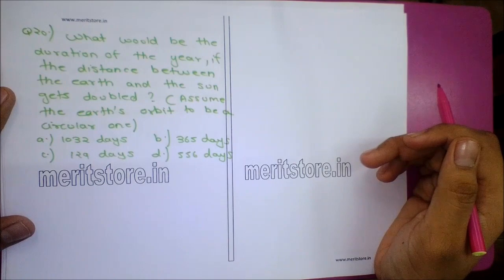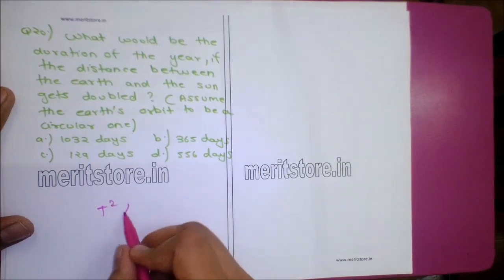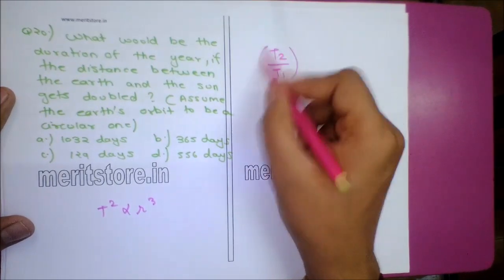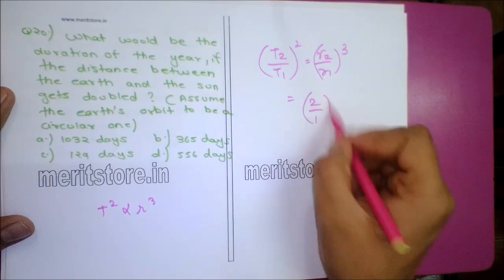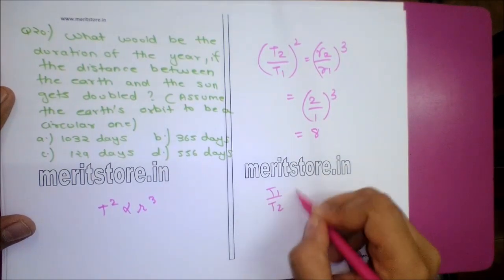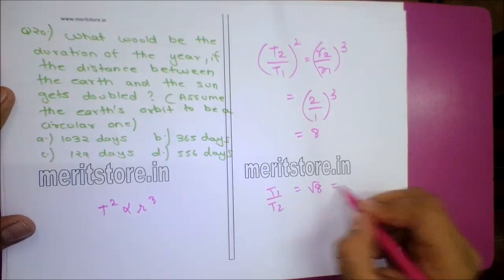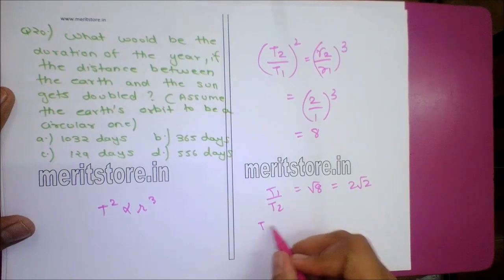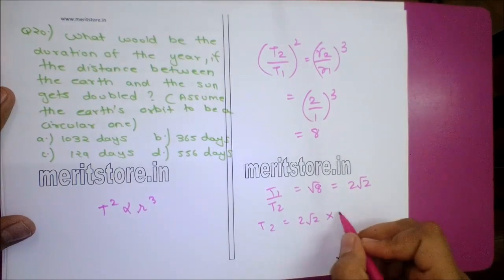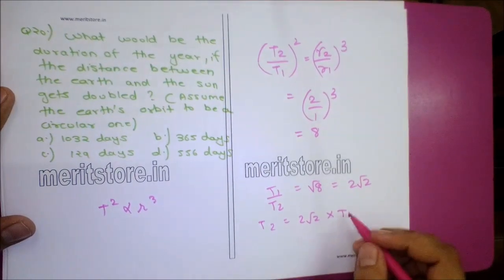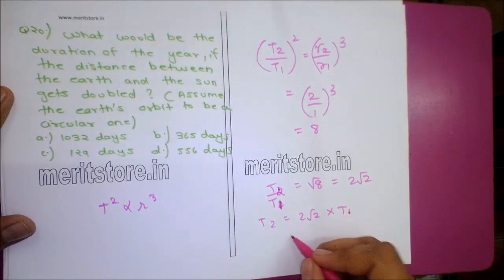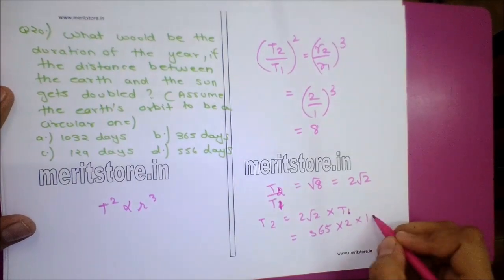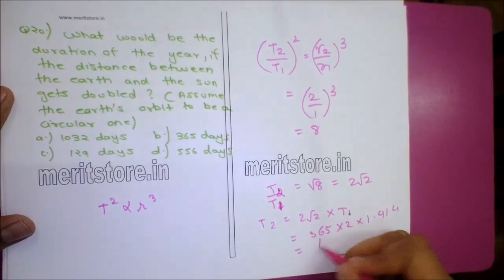Question 20: What would be the duration of the year if the distance between Earth and Sun gets doubled? By Kepler's law, T² ∝ R³. So (T2/T1)² = (R2/R1)³ = (2/1)³ = 8. T2/T1 = √8 = 2√2. Therefore T2 = 2√2 × 365 = 365 × 2 × 1.414 ≈ 1032 days. Option A is the correct answer.